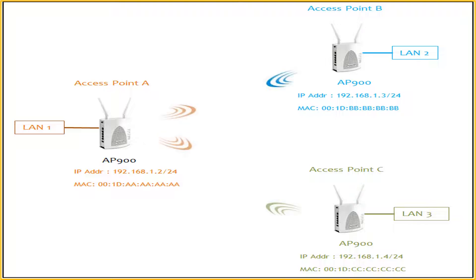Wireless access controllers came into being to settle this bottleneck by running and administrating multiple wireless access points. The wireless access point has lost the intelligent characteristic, while the wireless access controller turns into the new brain for wireless LAN.